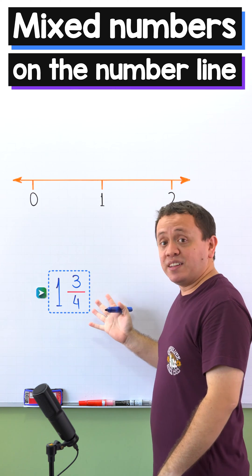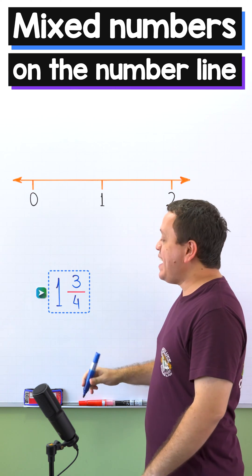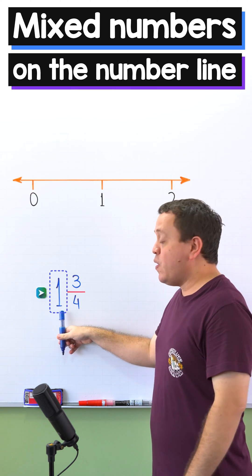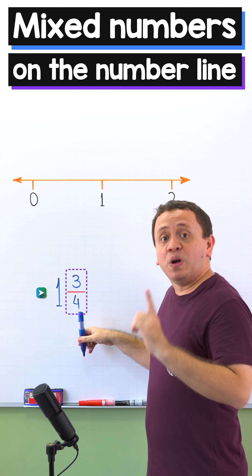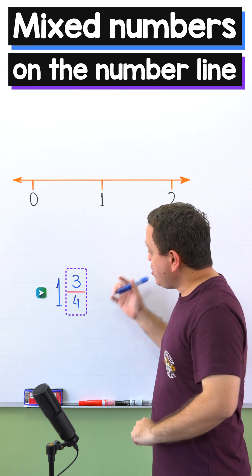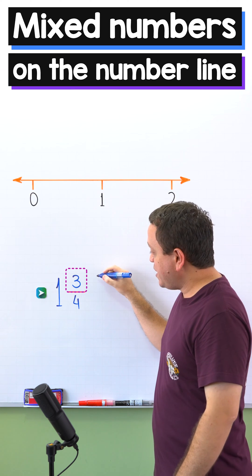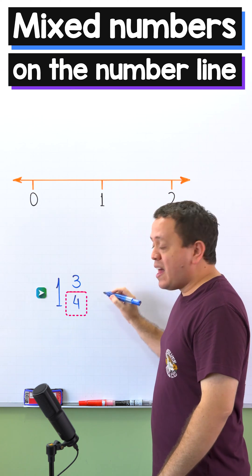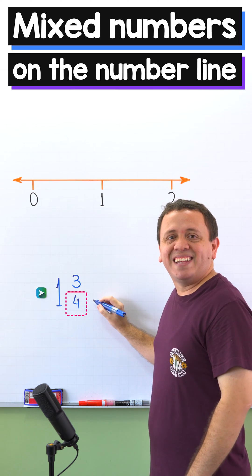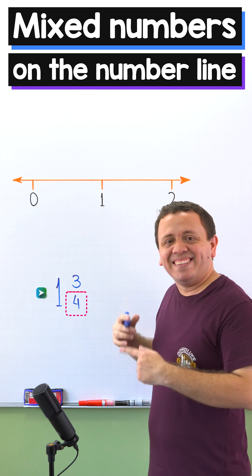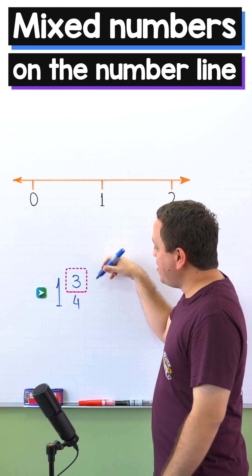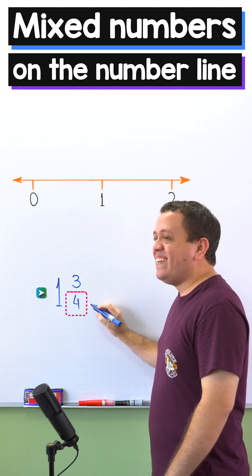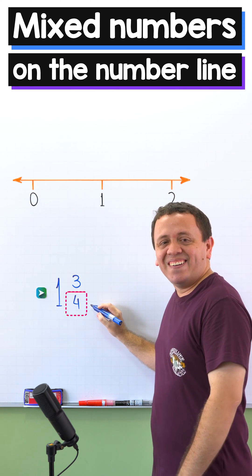A mixed number like this one is a number containing a whole number and a fraction. Also, in a fraction the top number is the numerator and the bottom number is the denominator. Once again, the top number is the numerator and the bottom number is the denominator.